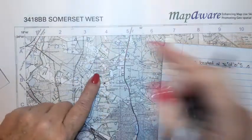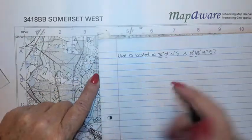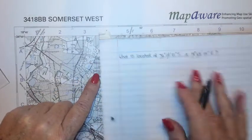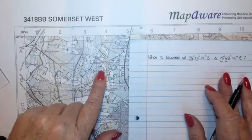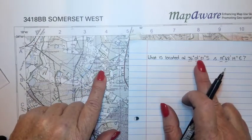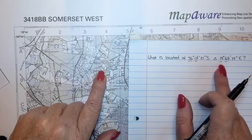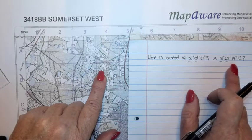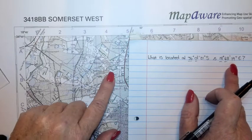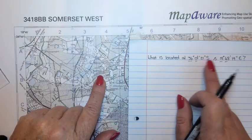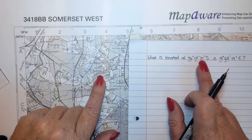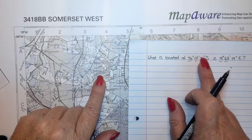That's block B4. Now you can take an educated guess on what feature is located at 34 degrees 1 minute 21 seconds south and 18 degrees 48 minutes 19 seconds east, but you can see there are quite a number of features in this block. You could go and guess, but it's going to be very difficult.